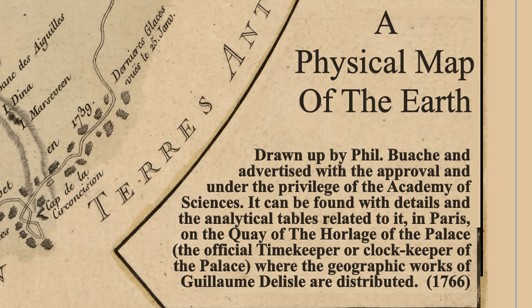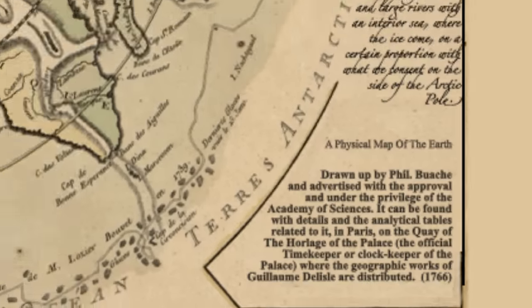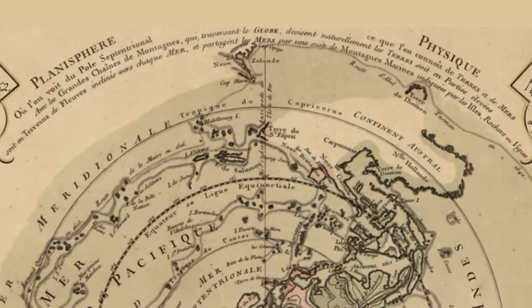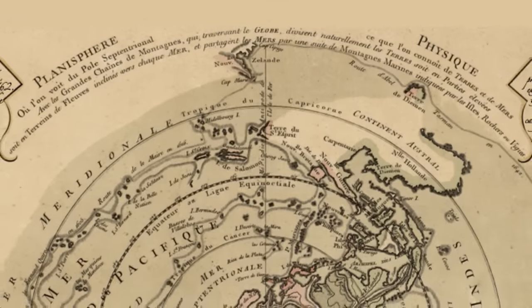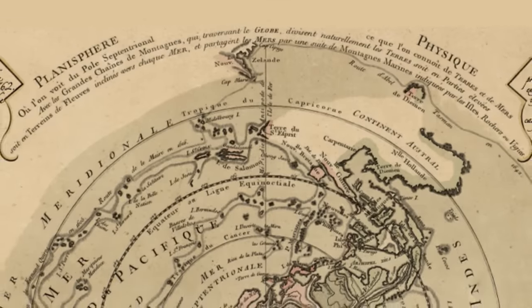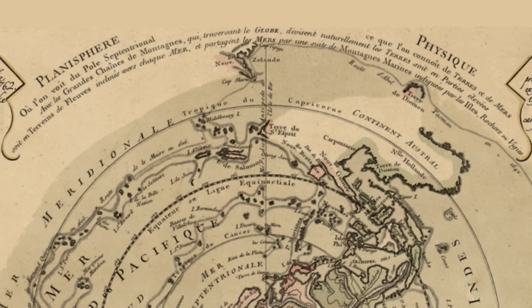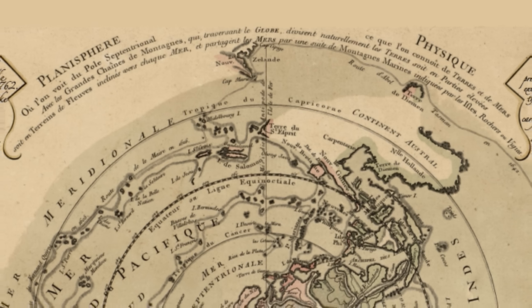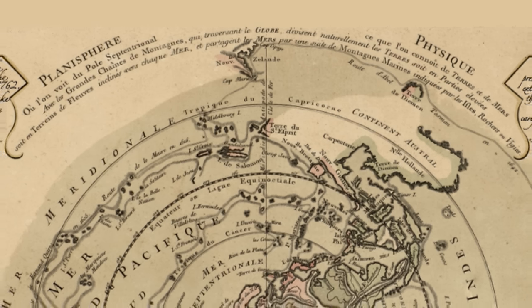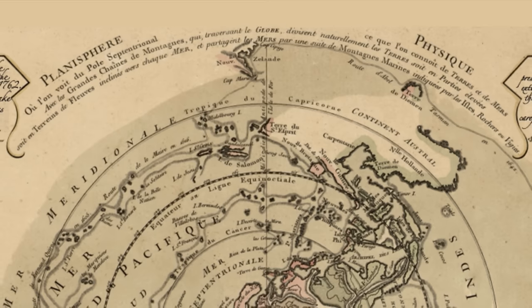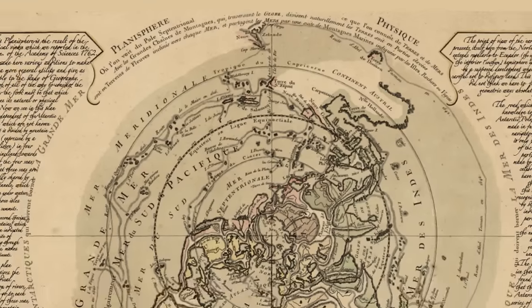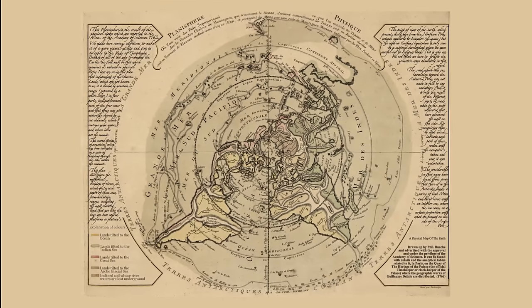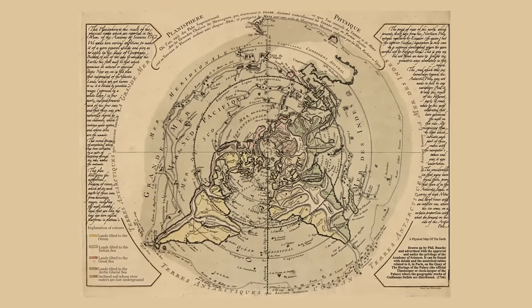It can be found with its details and the analytical tables relating to it in Paris on the key of the Horloge of the Palace — official clock keeper or time keeper of the palace — where the geographic works of Guillaume de l'Isle are distributed, 1766. At the top here we see it reads: the physical planisphere with the large mountain ranges which crossing the earth naturally divide the land either into high parts or inland of rivers included towards each sea, and share the seas of a sequence of sea mountains indicated by the isles and rocks.